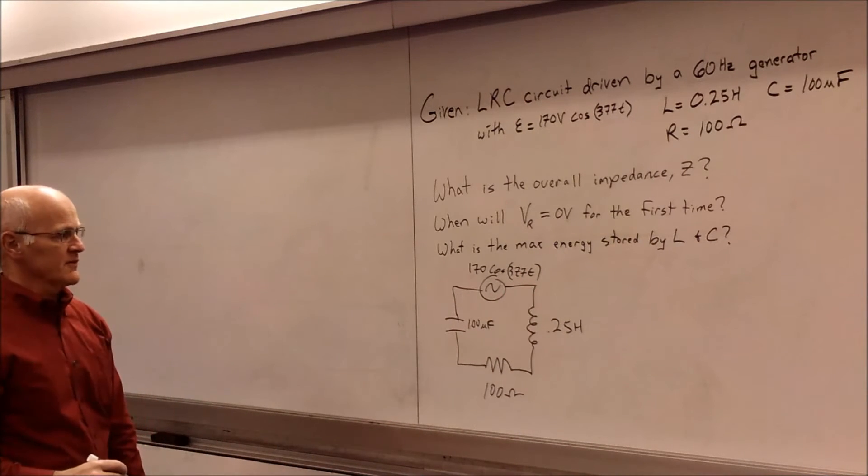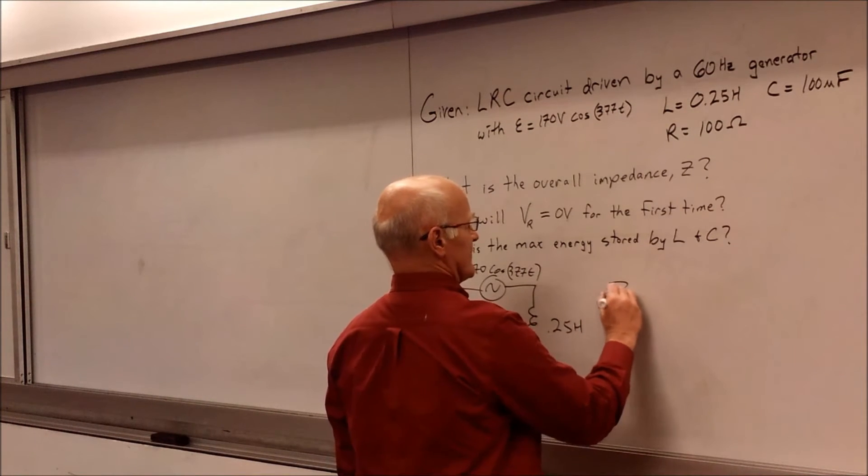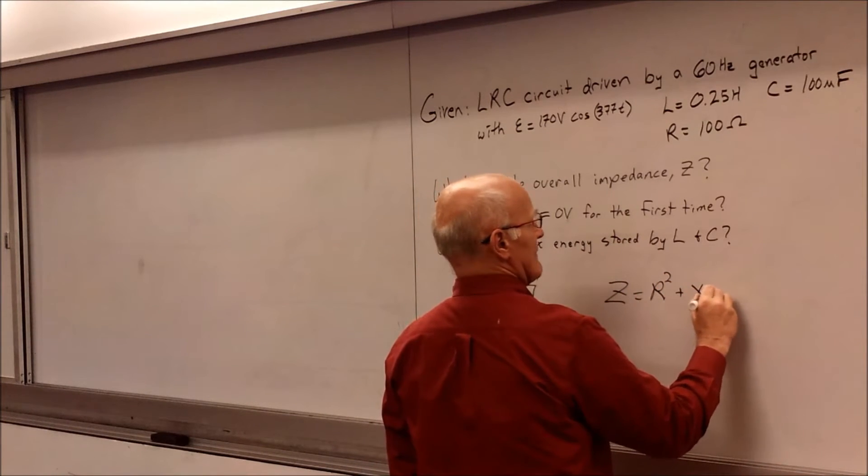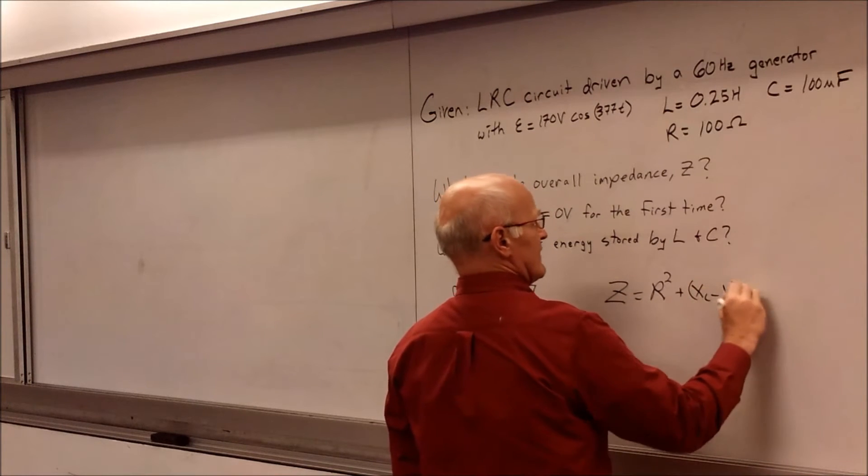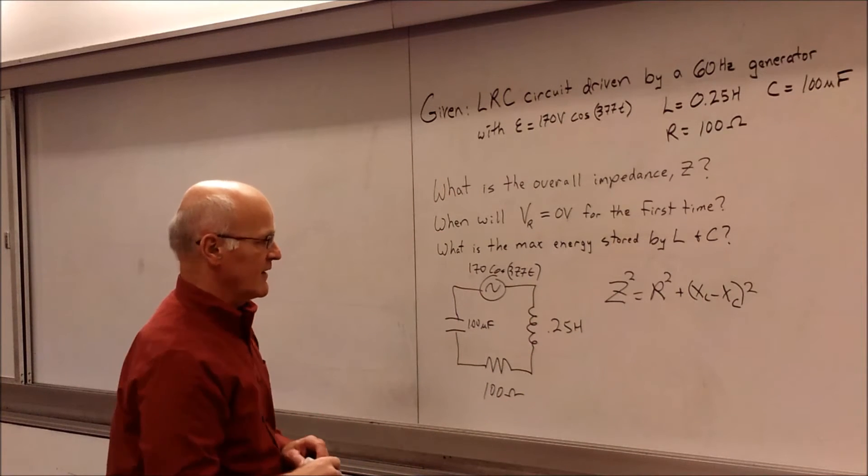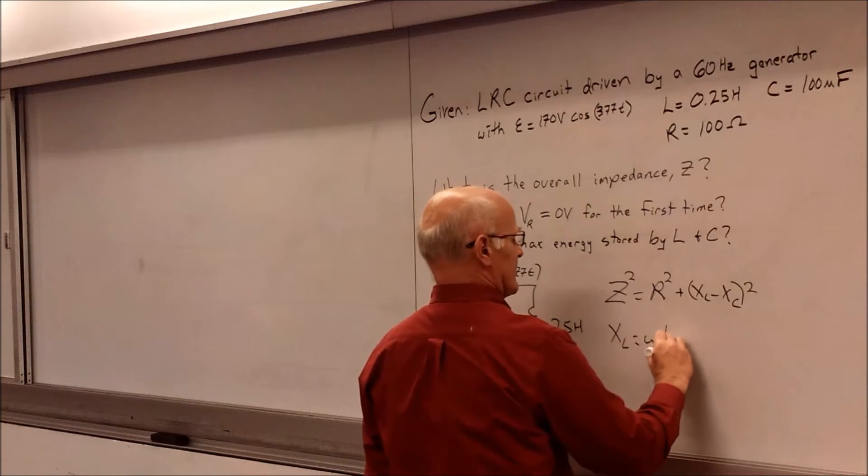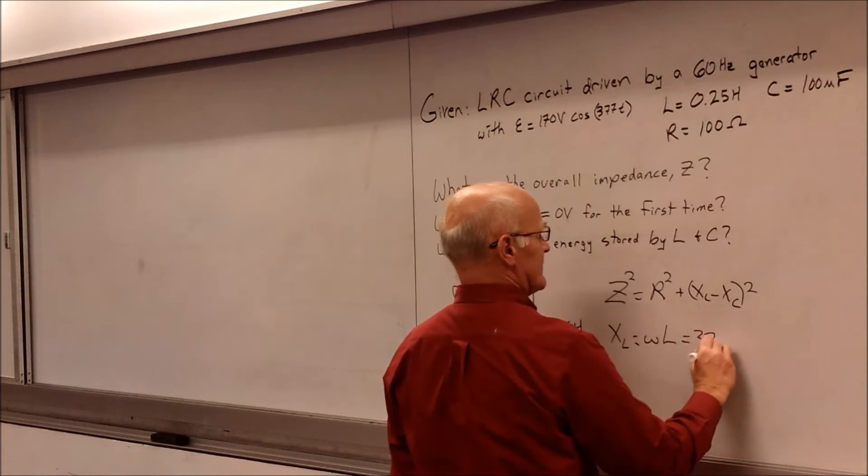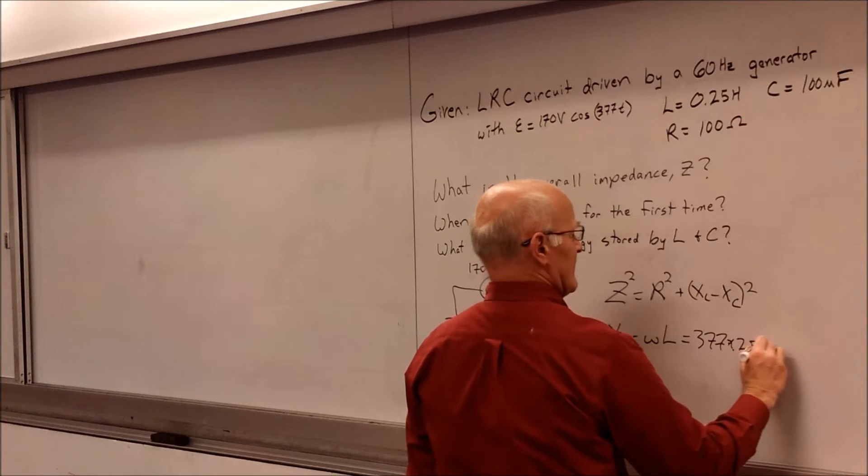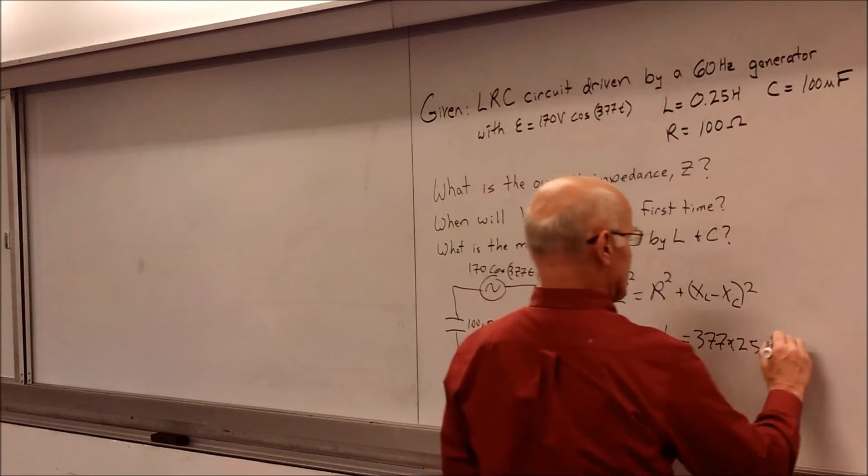And so the first thing we want to do is look at the equations for figuring out what the overall impedance happens to be. So our impedance equation is Z is going to be equal to R squared plus XL minus XC squared. So now we have to come up with these values. So what do we get for XL? XL is just given by omega times the inductance. So in this case here it's 377 times 0.25. And so the net result of that value is 94.25 ohms.